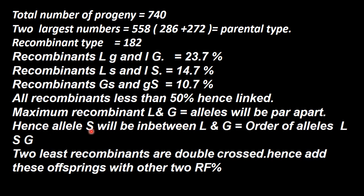Hence, allele S will be in between L and G. So the order of alleles will be L, S, and G. For L and G the distance is 23.7; between S and G it is 10.7 map units. These will be the map units for the gene map.